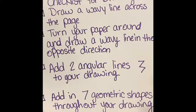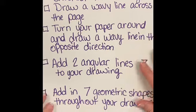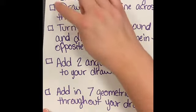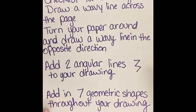I also have the objectives written down, so you can pause it any time when I put the objectives up for you. I always like to try to make a checklist so that way you have an understanding of everything that needs to be done. And I'm actually going to do this with you — my paper, my pencil. So the first step is draw a wavy line across the page.